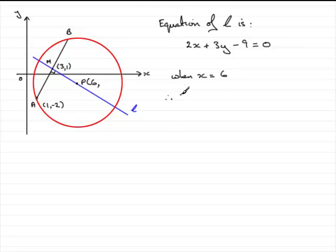what we've got is 2 times 6, which is going to be 12, plus 3y minus 9 equals 0.